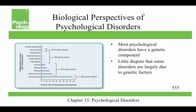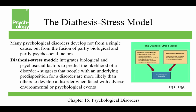A biological perspective holds that most psychological disorders have a genetic component, and there's little dispute that some disorders are largely due to genetic factors. Many psychological disorders develop not from a single cause, but from things that are partly biological and partly psychosocial. This has led to the diathesis-stress model, which integrates biological and psychosocial factors to predict the likelihood of a disorder. It suggests that people with an underlying predisposition for a disorder are more likely than others to develop it when faced with adverse environmental or psychological events.